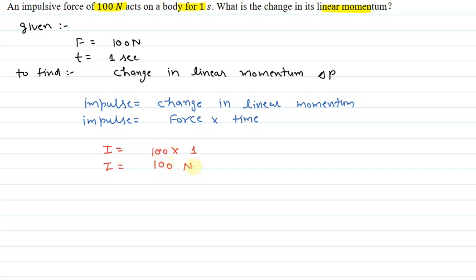100 Newton into second. So change in momentum delta p is equal to impulse I, so delta p is equal to